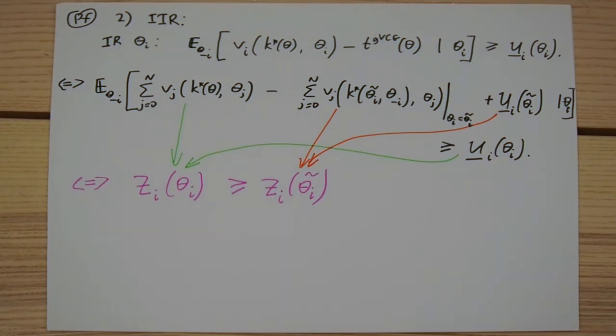However, we know that the least charitable type minimizes function z, because this is exactly how we defined it. Which means that this inequality always holds.